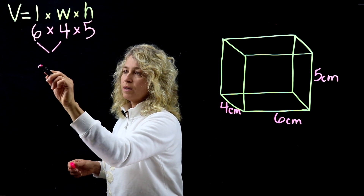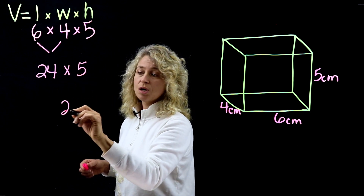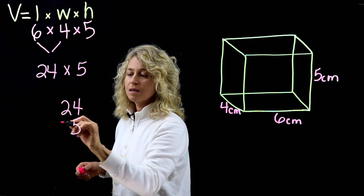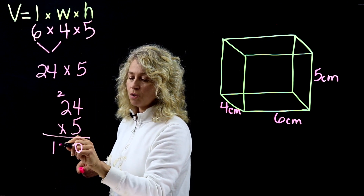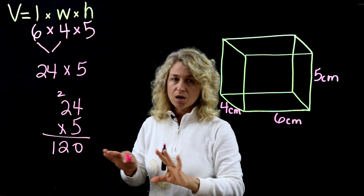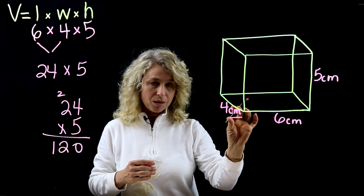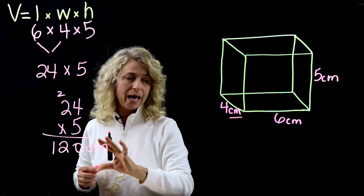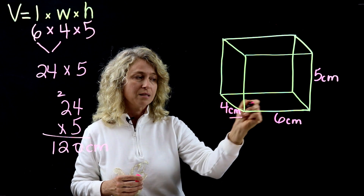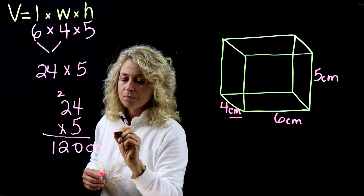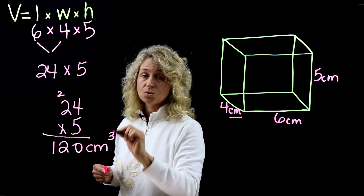So 6 times 4 is 24, and then 24 times 5. Working it out: 5 times 4 is 20, 5 times 2 is 10, plus 2 is 120. Now we're not finished — this is super important. The unit is centimeters, but because there are three dimensions, we need to put a 3 for cubed. So your final answer is 120 centimeters cubed.